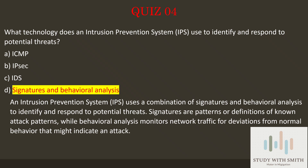An Intrusion Prevention System, IPS, uses a combination of signatures and behavioral analysis to identify and respond to potential threats. Signatures are patterns or definitions of known attack patterns, while behavioral analysis monitors network traffic for deviations from normal behavior that might indicate an attack.